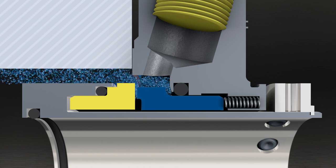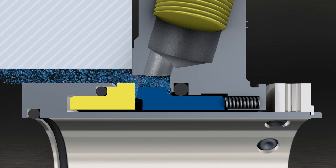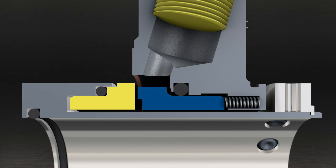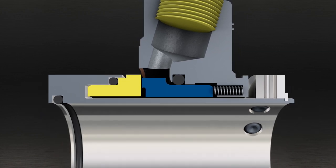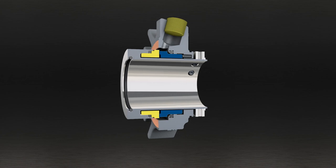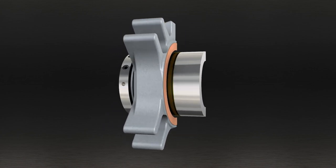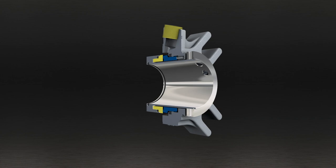The pressure in the sealing gap is balanced with the pressure of the seal face through the spring and the sealed fluid pressure. The challenge is to achieve the optimum interaction between the contact pressure and fluid film so that the surfaces are able to slide with minimum wear at all operating points. Only the perfect interaction of all parameters yields a safe sealing function and long service life.